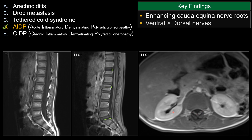There is distribution of anterior nerve root involvement more so than the posterior nerve root. In some cases, you can see involvement of both anterior and posterior nerve roots, but classically, anterior nerve roots tend to be involved more so than the posterior nerve root.